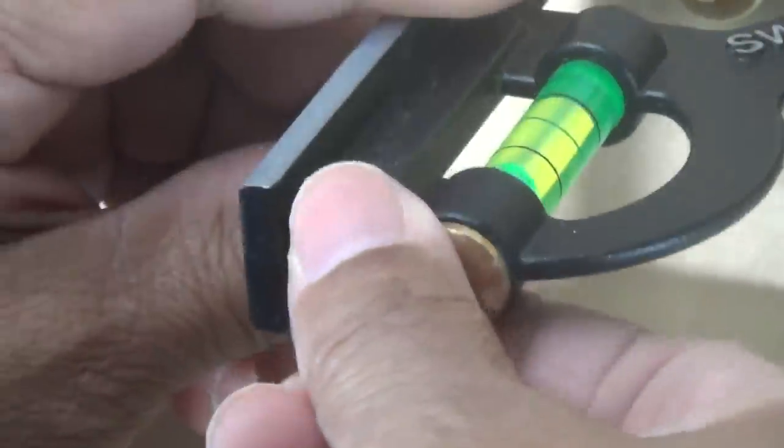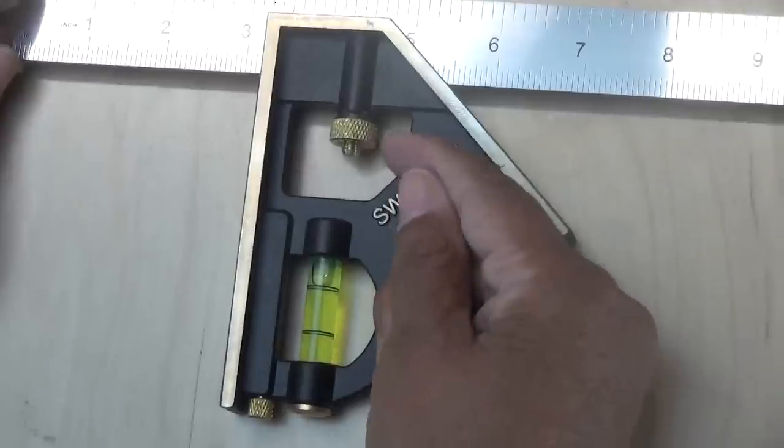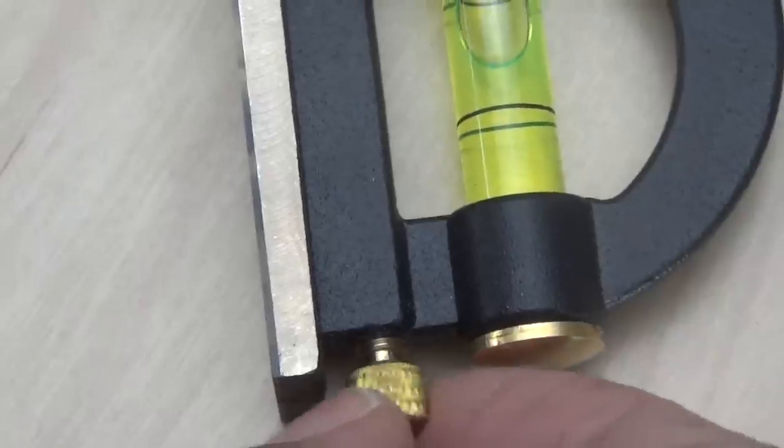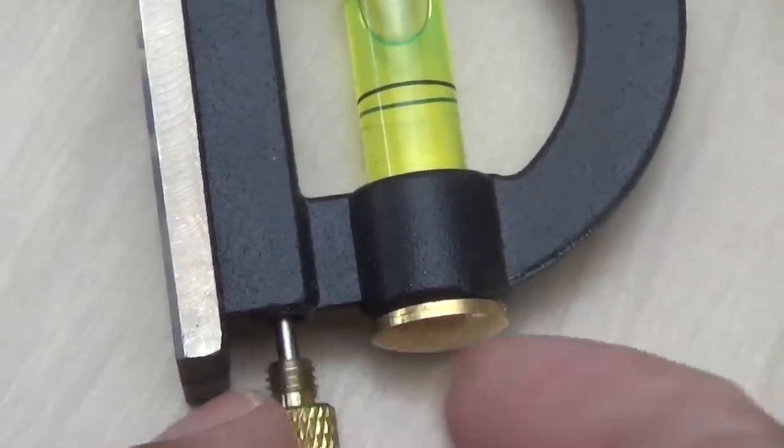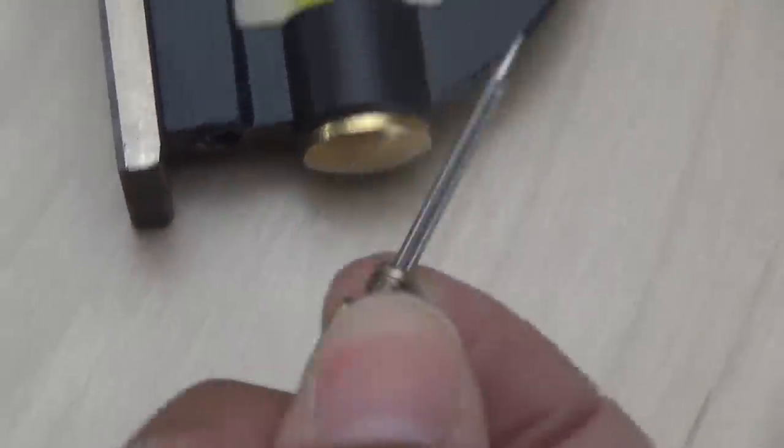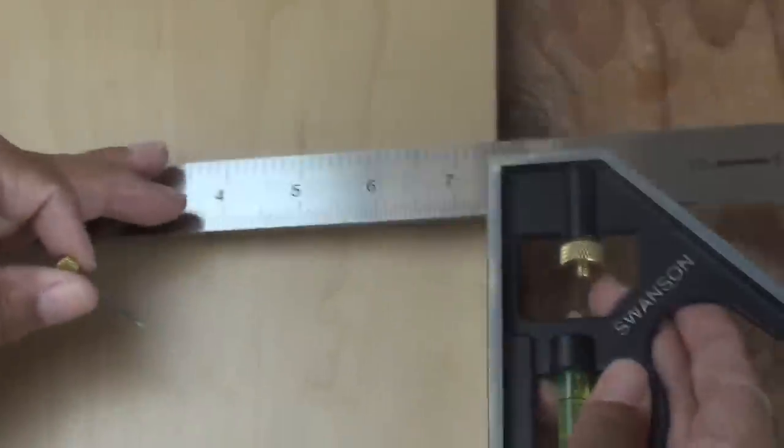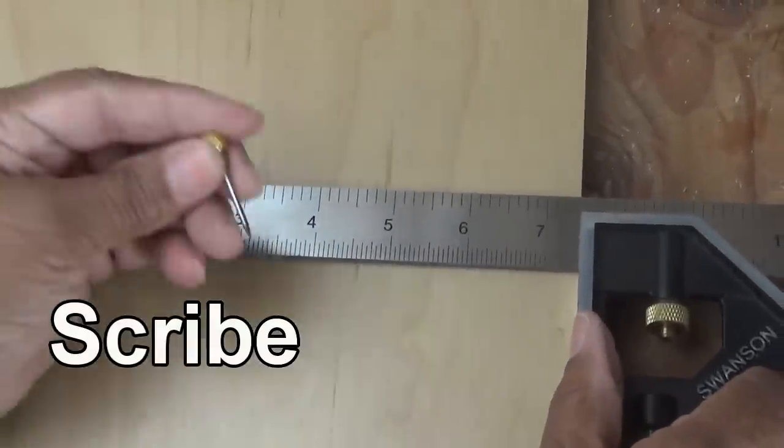Now maybe you're thinking well isn't that an adjustment knob like the adjustment knob here? No. No it's not. Let me show you. What it is is it is a scribe.